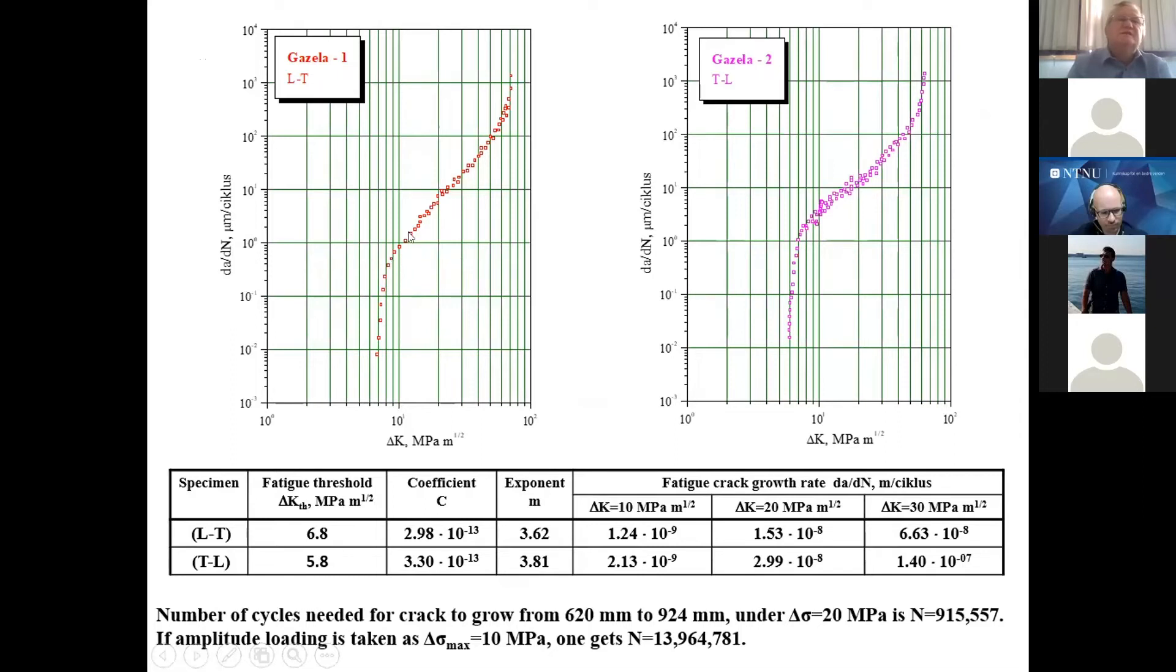So in this way we can get curves like these two shown here. Here you can see that typically they have three different ranges. We are interested mostly in this linear part of the curve because that is actually Paris law. And knowing that, by some simple mathematical operations and procedure, we can get coefficients C and M so that we can define fatigue crack growth rate. Results of this procedure are given here. This is according to standard ASTM E647. And also prediction for a crack to grow from 620 mm to 924 mm under amplitude loading of 20 MPa. Prediction for number of cycles is close to a million. And then for amplitude loading of 10 MPa, prediction is close to 14 million.